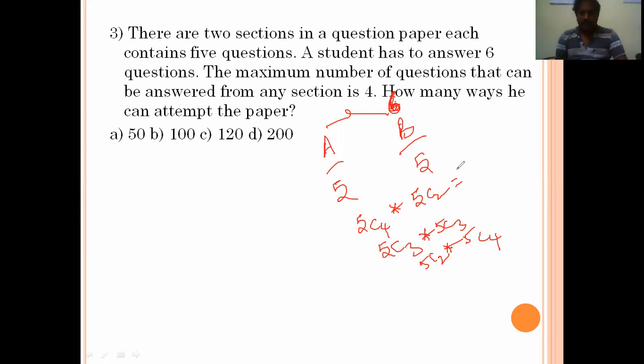That means 5C4 times 5C2 from this section. This is one possibility. Another possibility is 5C3 times 5C3. Another possibility is from first section he chooses two questions, from second section he chooses four. 5C4 is 5, 5C2 is 10, that value is 50. 5C3 is 10, 5C3 is 10, that value is 100. 5C2 is 10, 5C4 is 5, that value is 50. OR means addition. This value is totally 200. There are 200 possibilities to attempt these six questions from the two given sections. Option D is the right answer.